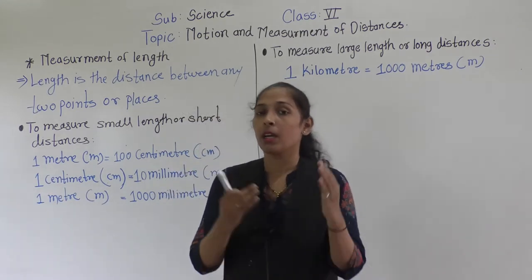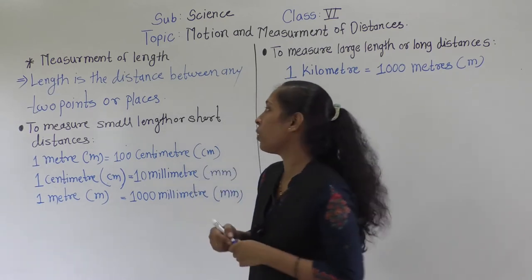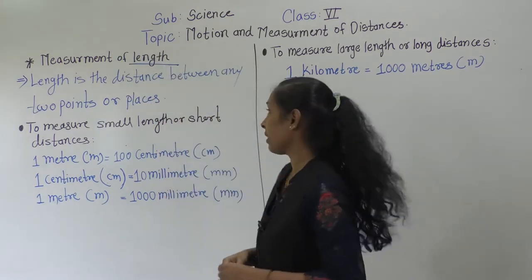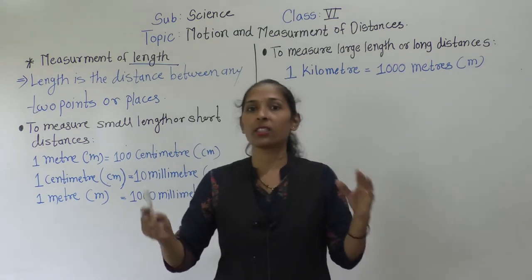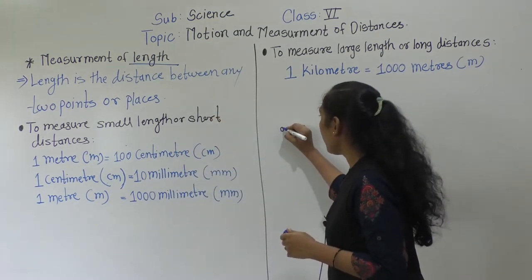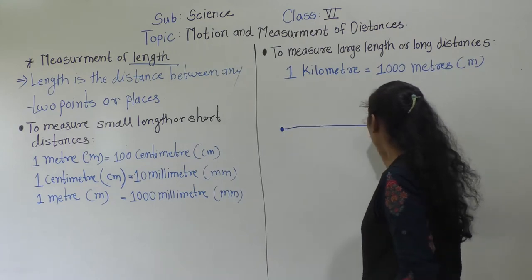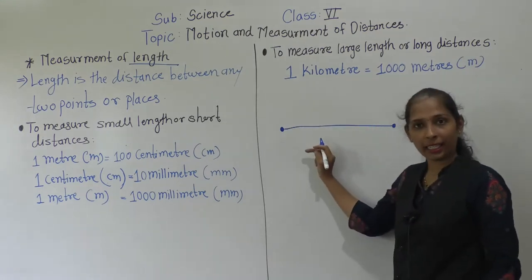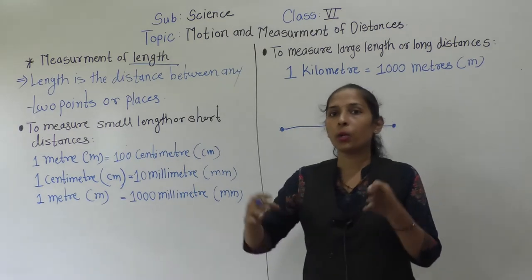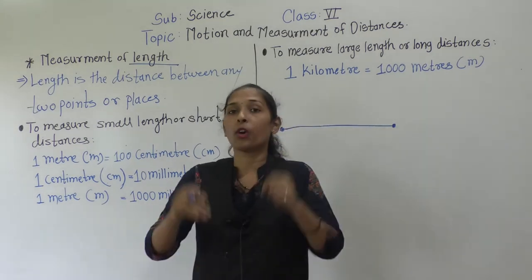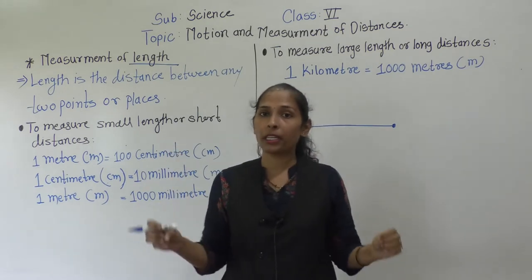So how do we measure length? Before we look at which instruments we use, let's discuss what is meant by length. Length is the distance between any two points or places. Here I have drawn one point and another point. If you want to measure the distance between these two points, then what we are measuring is the length — the distance between any two objects, two points, or two places.